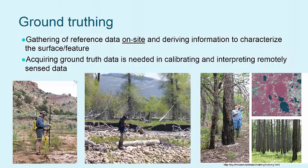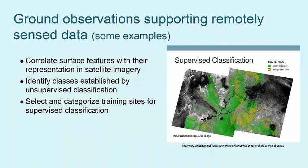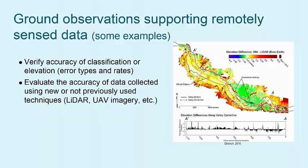This includes taking a variety of types of measurements, GPS points, identifying certain types of vegetation or other features, etc. The ground observations are essential in supporting and enhancing the quality and accuracy of the remotely sensed data. This includes verifying analyses made remotely and training the computer on certain features or sites to improve classification, as well as evaluating accuracy of the data and the analyses made from the data of your project.